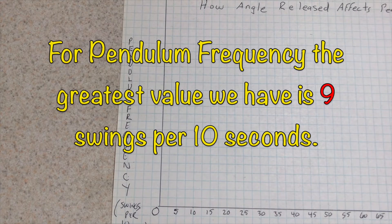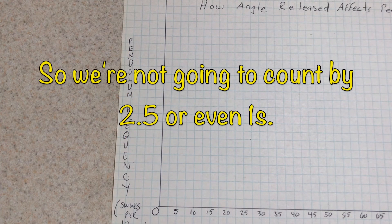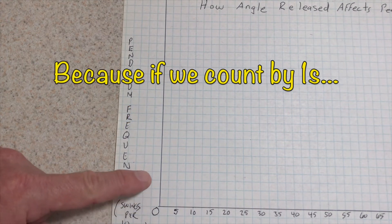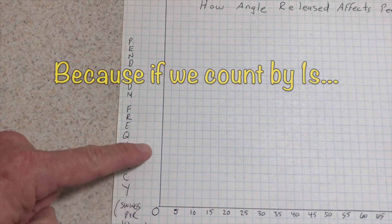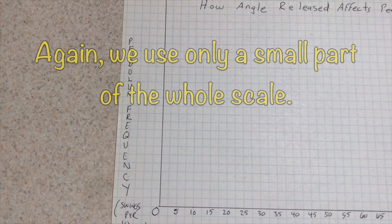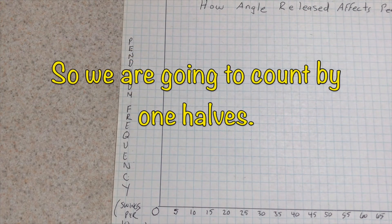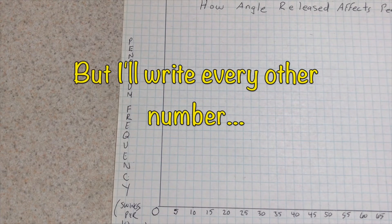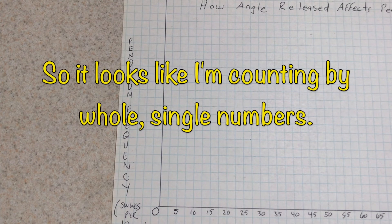For pendulum frequency, the greatest value we have is nine swings per ten seconds. So we certainly aren't going to count by two-and-a-halves, and we're not going to count by ones, because if we count by ones we will use just a small part of the whole scale. So we're going to count by one-half, but again I'll write every other number, so it looks like I'm counting by whole single numbers.